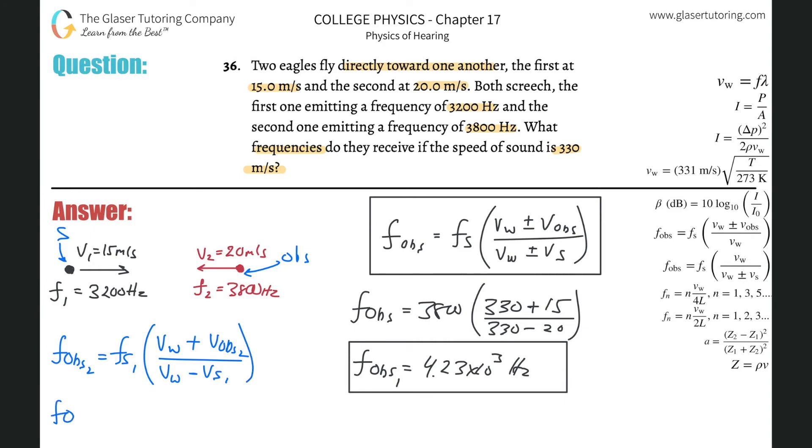So the frequency that bird number two will be observing will be equal to the frequency of the source, which is bird number one. So that's the 3200 hertz, multiplied by the 330 now, because that's the speed of sound, plus then this velocity, that's the observer, 20. That's usually when I know it's time to stop. Divided by then the 330 minus the velocity of the source. So that's moving towards, so it's 15.